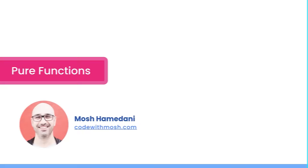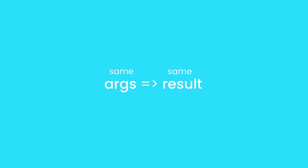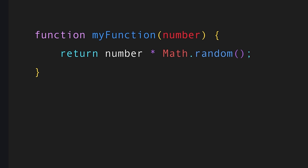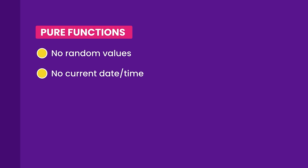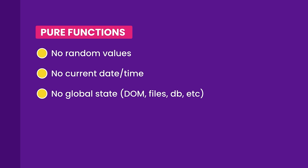Another important concept in functional programming is pure functions. We say a function is pure if every time we call it with the same arguments it always returns the same result. Look at this function — it's not pure because every time we call it, Math.random generates a new value. In contrast, a function that always returns the same result for the same input is pure. In pure functions, we cannot use random values, we cannot use the current date/time, and we cannot read or change global state like DOM elements, files, or databases — because relying on or changing global state can affect the result of our pure functions.